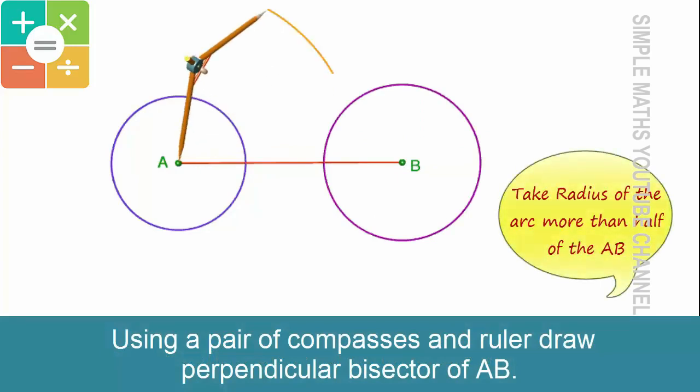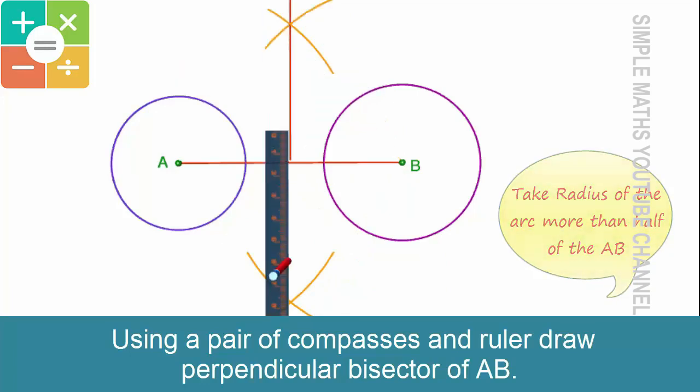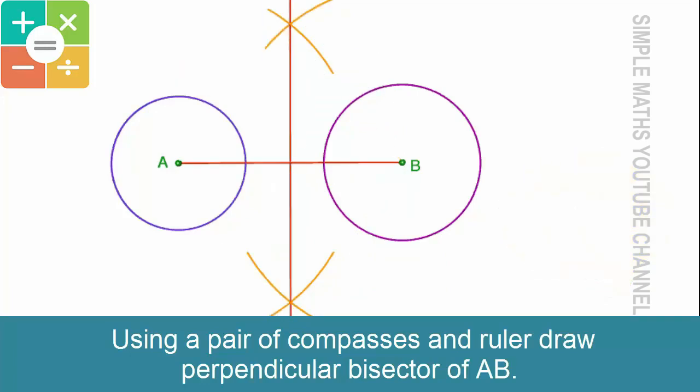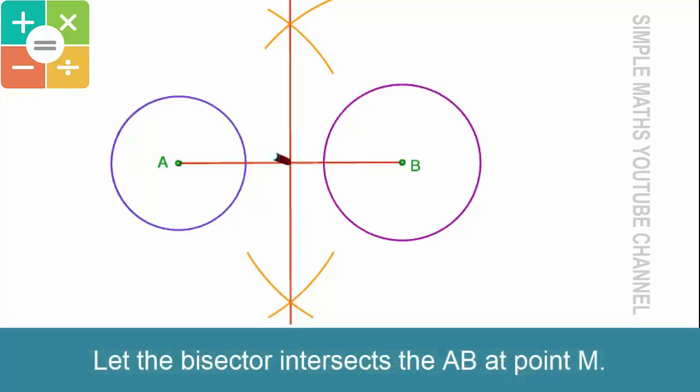Using pair of compasses and ruler only, draw a perpendicular bisector of AB. Let the bisector intersect AB at point M.